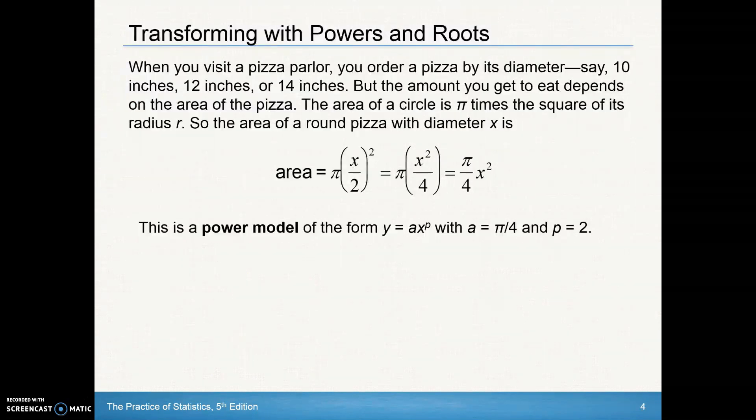So some of the things we'll be looking at, as an example here, is when you visit a pizza parlor, you order a pizza by its diameter, say they're 10, 12, or 14 inches. But the amount you get to eat depends on the area of the pizza. And the area of a circle is pi times the square of its radius. So again, remember, area is measured in square units. So that kind of information will help you decide if a power model would be useful for here.